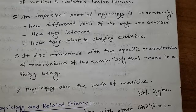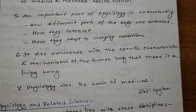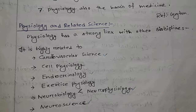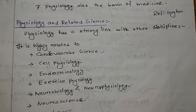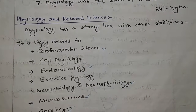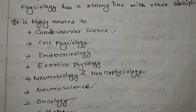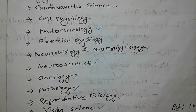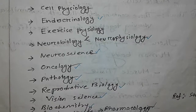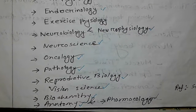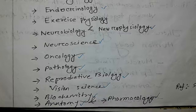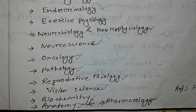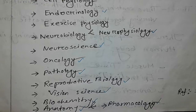Physiology is also the basis of medicine. Physiology and related sciences: Physiology has a strong link with other disciplines. It is highly related to cardiovascular science, cell physiology, endocrinology, exercise physiology, neurobiology and neurophysiology, neuroscience, oncology, pathology, reproductive biology, psychology, biochemistry, biology, and pharmacology.